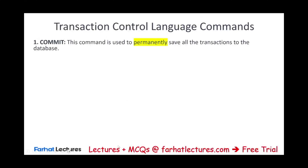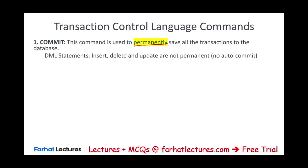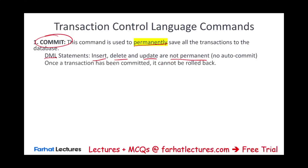Starting with commit — this command is used to permanently save all transactions in a database. Data manipulation language statements like insert, delete, and update are not permanent on their own; they don't auto-commit or auto-save. So after inserting, deleting, or updating rows, you must commit those changes. Once a transaction has been committed, it cannot be rolled back — simply put, once you save it, you cannot undo.